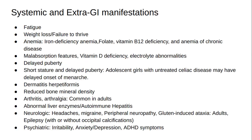Intussusception, fatigue, and weight loss or failure to thrive are noted manifestations. Anemia and iron deficiency are common — anemia that is resistant to oral iron supplementation is a common extraintestinal manifestation of celiac disease in adults. Other causes include folate deficiency, vitamin B12 deficiency, and anemia of chronic disease.